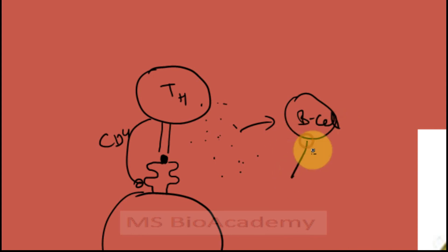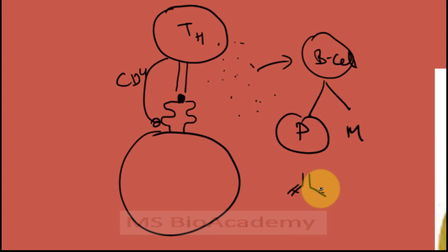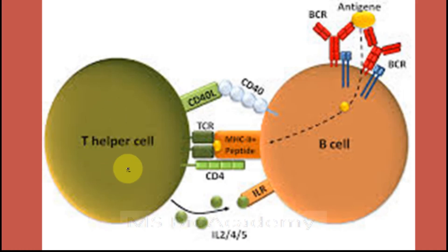The activated T helper cells then release certain cytokines — protein molecules — outside the surface, which in turn activate the B cells. B cells then differentiate into plasma cells and memory cells. Plasma cells secrete antibodies specific to this particular peptide, which will neutralize it. These cytokines also attract other immune cells to the area and generate an immune response against this peptide.